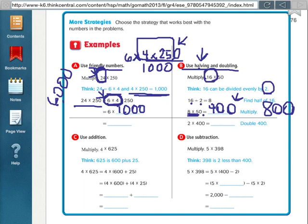The property using halving and doubling means first cut this number in half and do the multiplication problem. So, instead of 16 times 50, we're doing the problem 8 times 50. And then take your answer and double it to get the final answer.